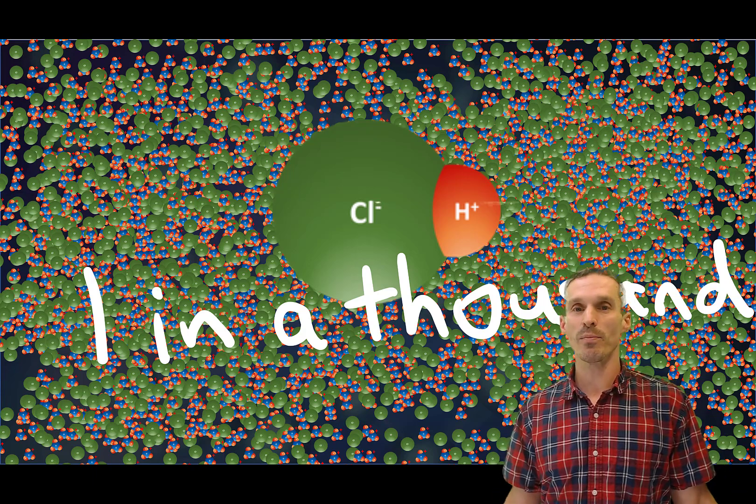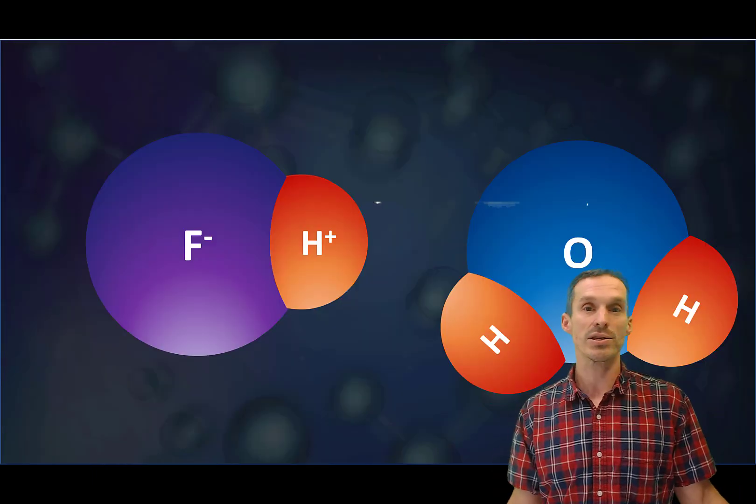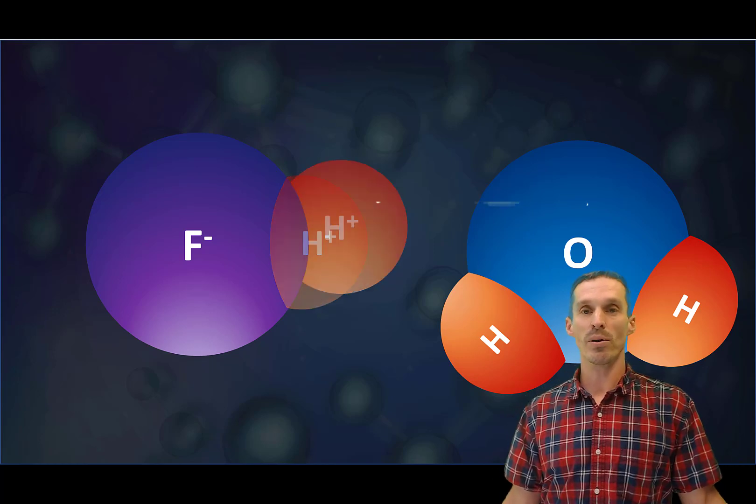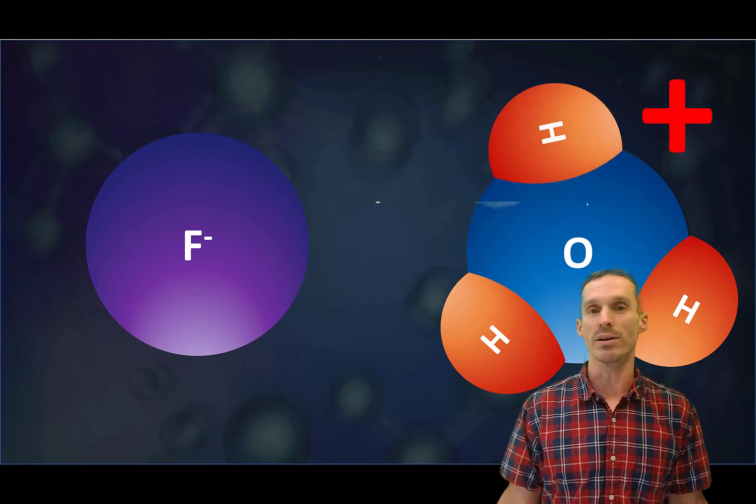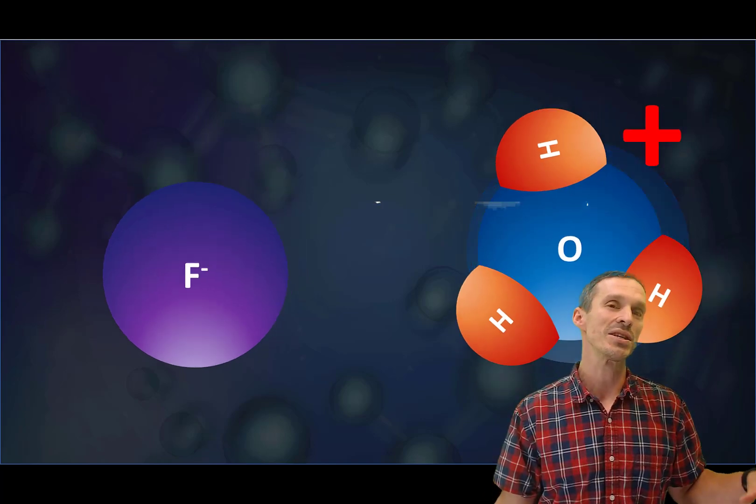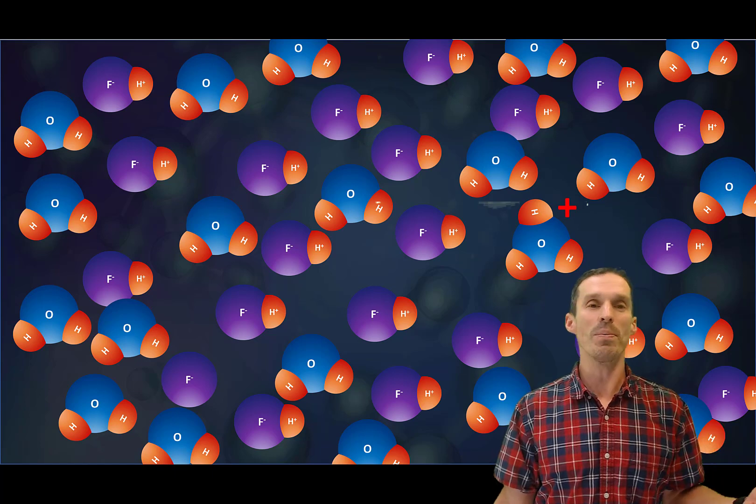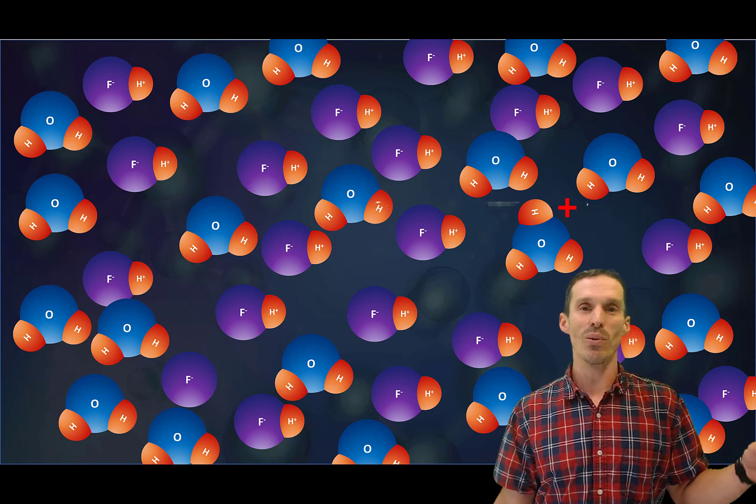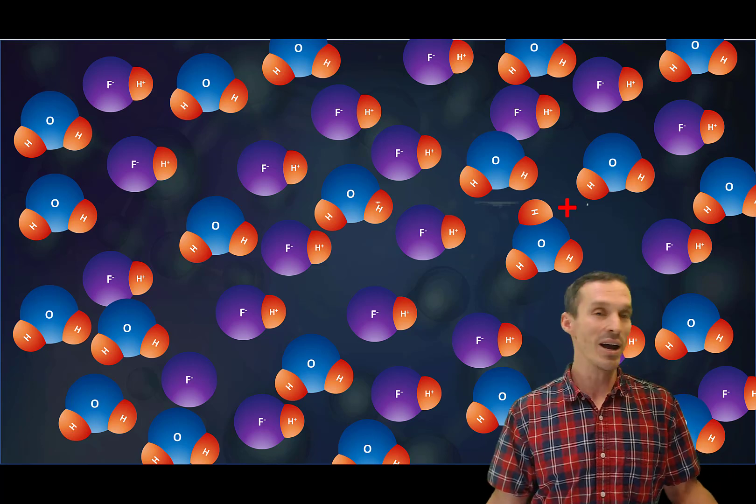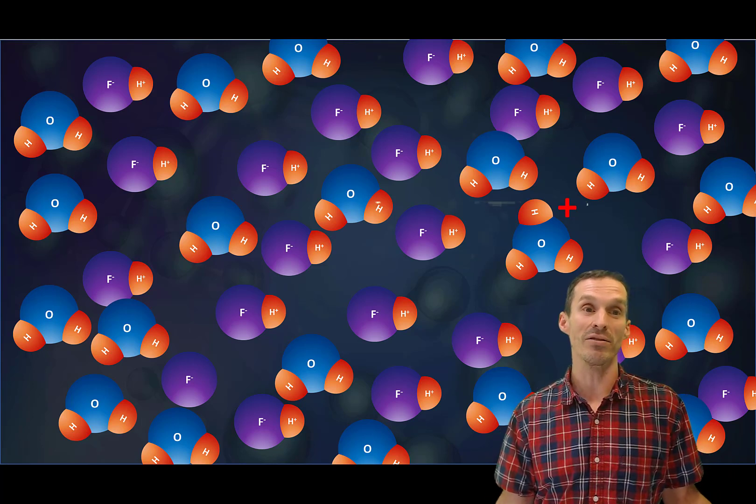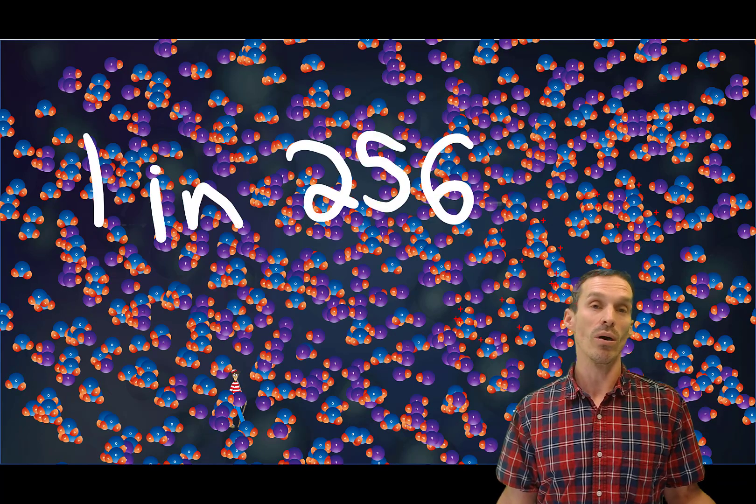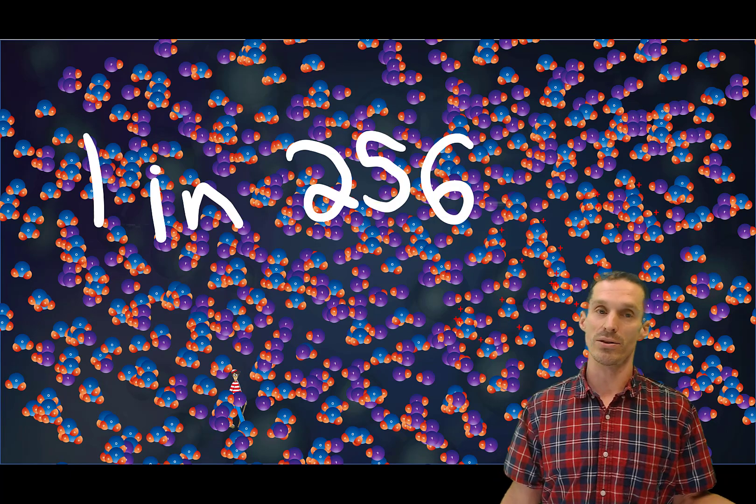Now how does that compare to a weak acid? Let's deal with HF, hydrofluoric acid, for example, which is a weak acid. It will transfer its proton to water, make H3O plus. I'm not going to get into the specific details, but just dealing with the pKa, the opposite occurs. In other words, there is more HF that still contains the proton than there is that doesn't. You'd have to look pretty hard to find the fluoride ion by itself, on a ratio about one in 256. So most of it is still bound.